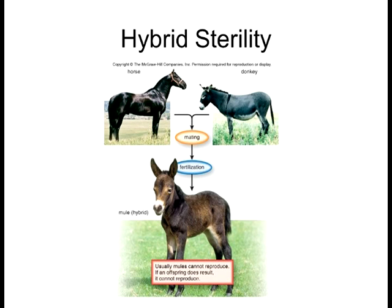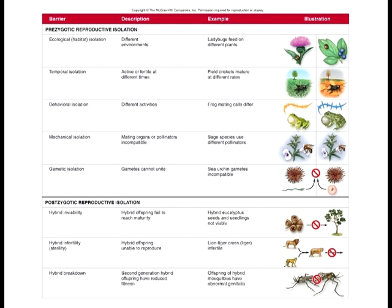The last postzygotic barrier is called hybrid breakdown. Let's say the hybrids are viable and reach sexual maturity, and they're not sterile — this is actually the case for some mules. Here's the final barrier: the hybrids themselves can have offspring, but that offspring can't mate, so you're still stuck at the hybrid stage and don't get propagation of the species. If mules were to produce fertile offspring, boom — we'd have a new species. This actually happens especially with trees, where hybrids have overcome some of the problems. Plants have less of a problem with hybrid sterility than animals do.